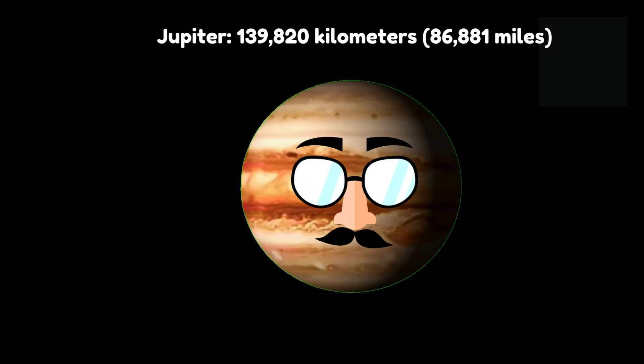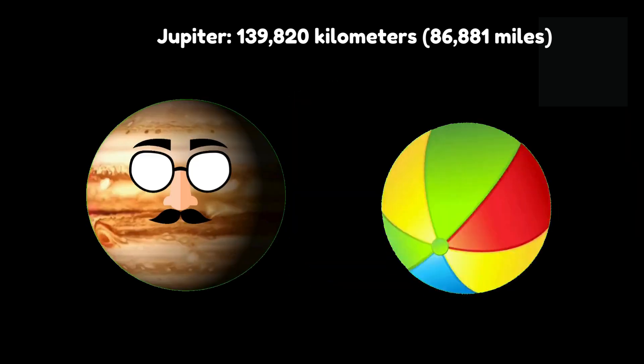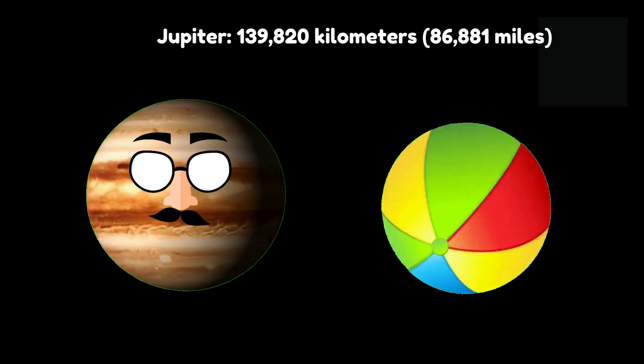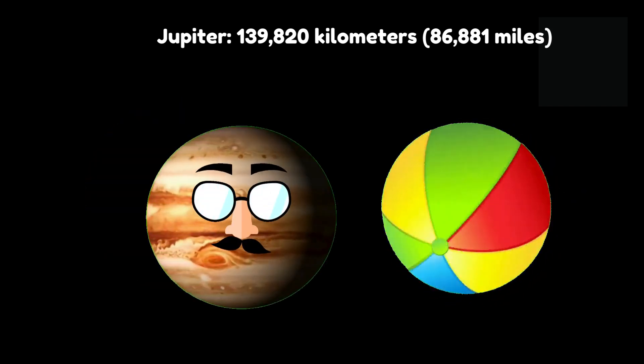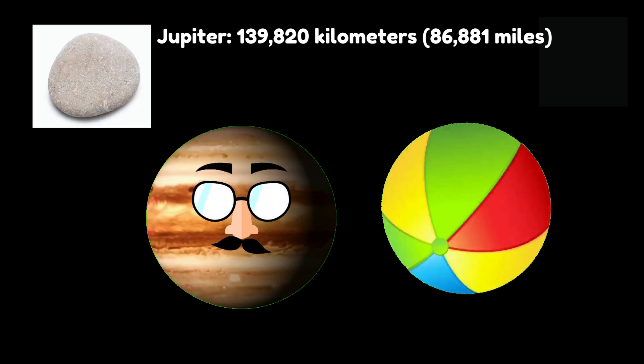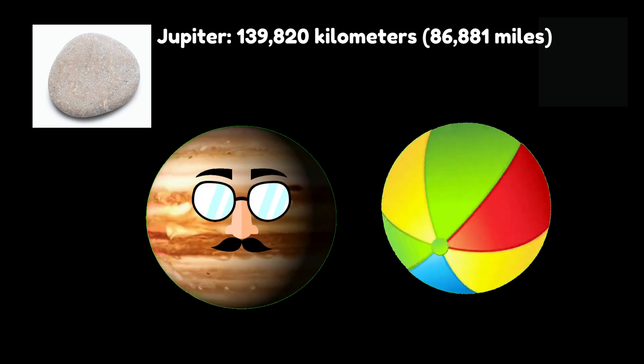Brace yourselves for the largest planet in our solar system, Jupiter. If Jupiter were a giant beach ball, Earth would be like a little pebble next to it. That's one colossal ball game.